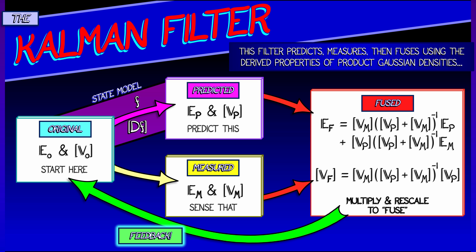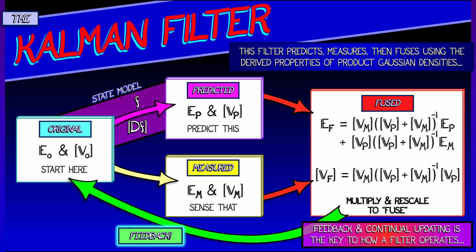We take that fused expectation and covariance and start all over again. Feed that back into the state model, measure it again, fuse it again.